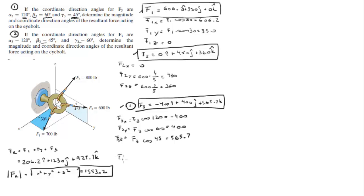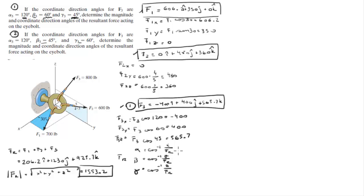You can find FR's direction angles by taking the cosine inverse of each component divided by the magnitude: the X component divided by the magnitude, the Y component divided by the magnitude, and the Z component divided by the magnitude. The angles come out to be 82.37°, 37.6°, and 53.41°.